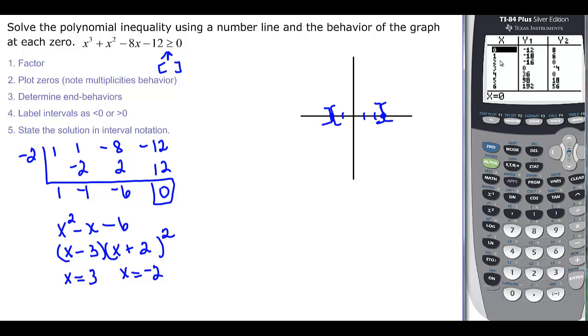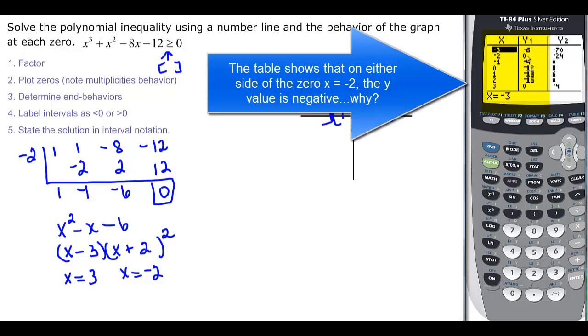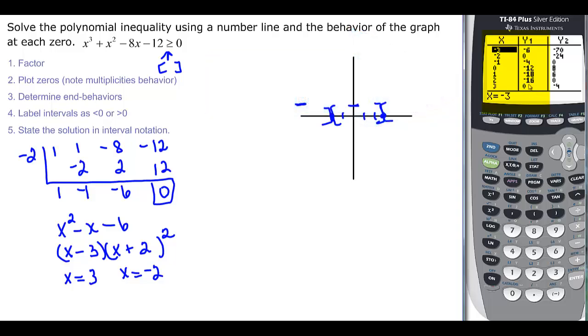So I'm coming over here to my calculator, and y1 is where this polynomial is. And I want to look at something smaller than negative 2. So over here, it's got a negative value. And if I look in between the two, and I look at like 0, I see that it also has a negative value. Here's my negative, there's my 0, and then until I get to the next 0, it's still a negative value. And then if I look at 3, I need to look beyond 3, and I see that those are all positive.